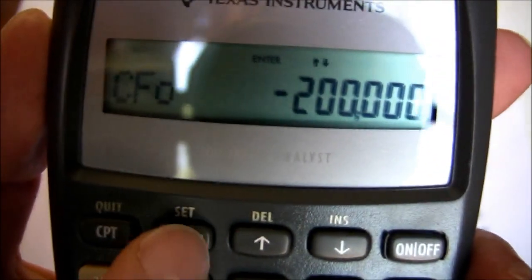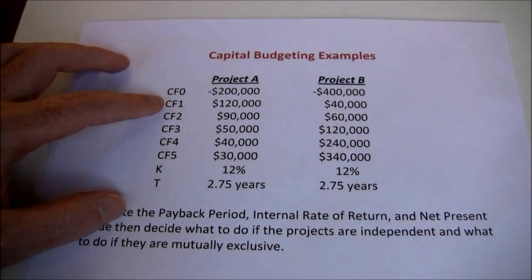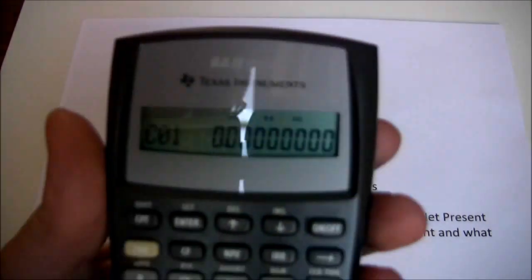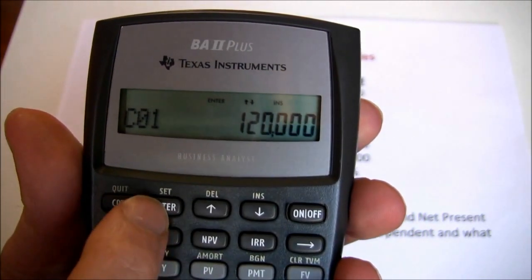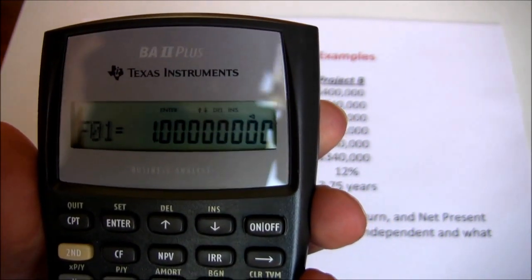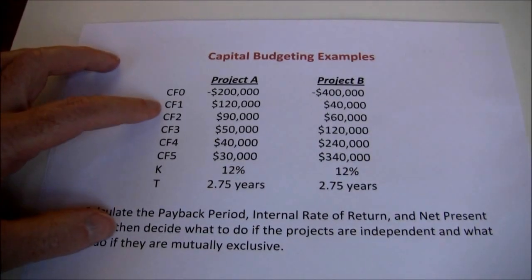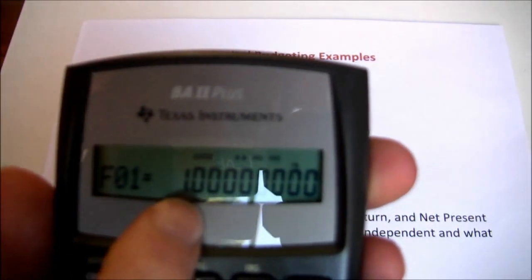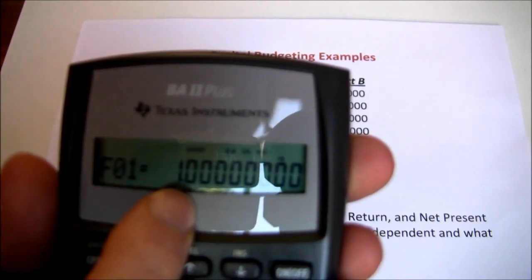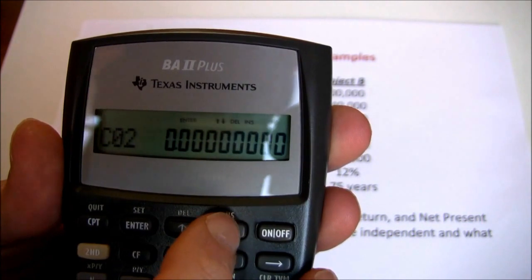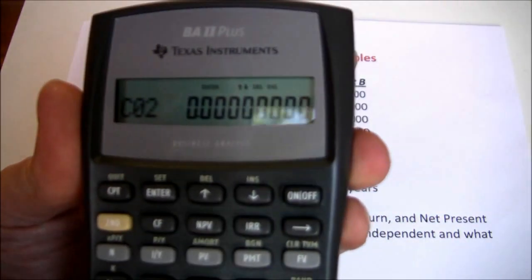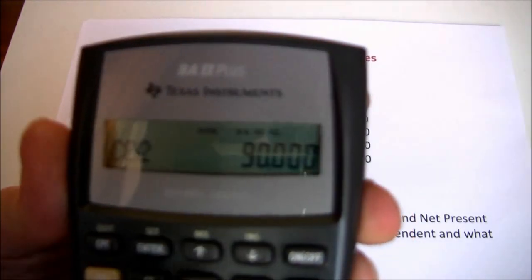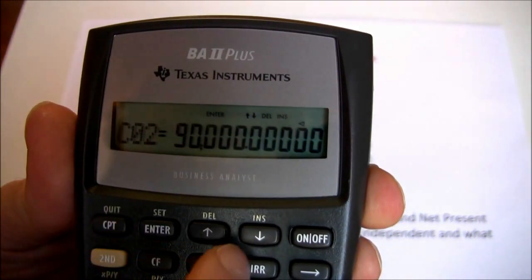Once we've got that done, press enter, then down arrow — now it's asking for CF1. Our CF1 is going to be $120,000, so we go ahead and put that in. Enter, down. Now it's asking us for the frequency — we've just got that cash flow one time. The default value is 1 on frequency, so we don't have to do anything, we can just press the down arrow again and go to our next cash flow. That next cash flow is $90,000, so let's go ahead and put that in. Enter, down.